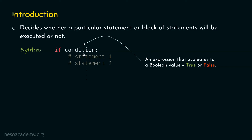When the condition is satisfied, it means the condition returns true. If this condition returns true, then these statements will be executed; otherwise, these statements will not be executed. There are only two possible values this condition can return: either true or false. Now, it can be observed that these statements are indented. This clearly indicates that this block of statements will be executed based on this condition. Indentation plays an important role in Python in deciding the block of code.